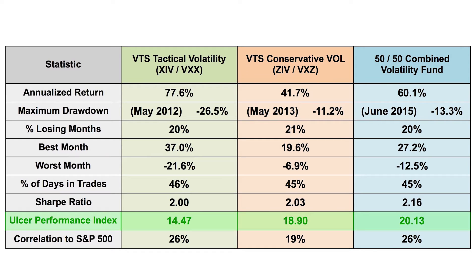The higher the Ulcer Performance Index number, the better. For the main VTS Tactical Volatility, 14.47 is pretty high, which shows that the drawdowns have been relatively low and also relatively short-lived. The reason I like the Ulcer Performance Index so much is because it accounts for both magnitude and duration of drawdowns. The VTS Conservative Vol improves on it, and combining both gets even better. This isn't always the case — you can't just mash any two strategies together and expect the numbers to improve. The reason this works here is that both strategies are different: they have different indicators, they focus on a different part of the VIX futures curve, and they have a relatively low correlation to one another. So putting them together makes sense and it ends up helping the numbers.